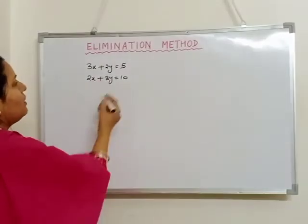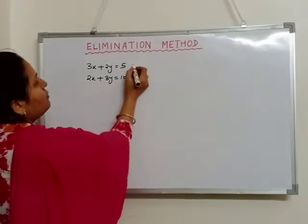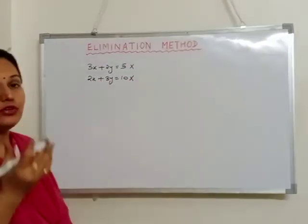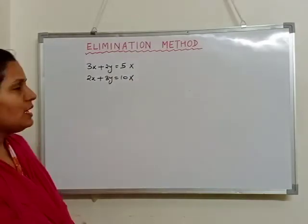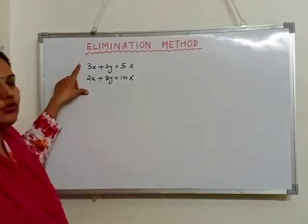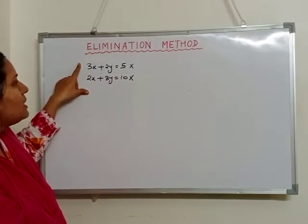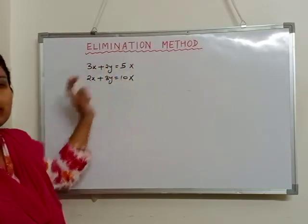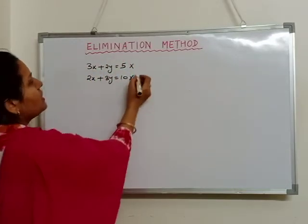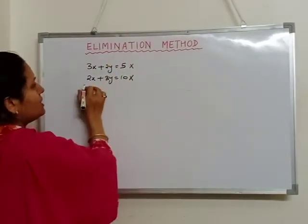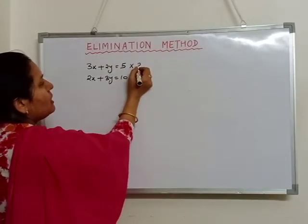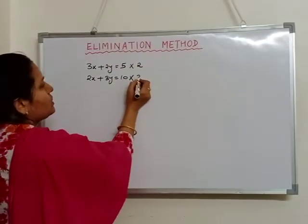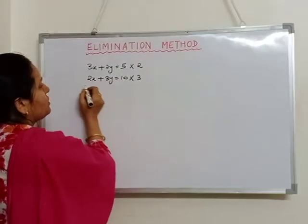Now what we have to do is we have to multiply both the equations. Since I want to eliminate the x variable, I have to take the coefficient of x. I have to multiply both the equations with the opposite coefficient. That means since I have to remove x, I have to multiply the first equation by 2 and the second equation by 3.